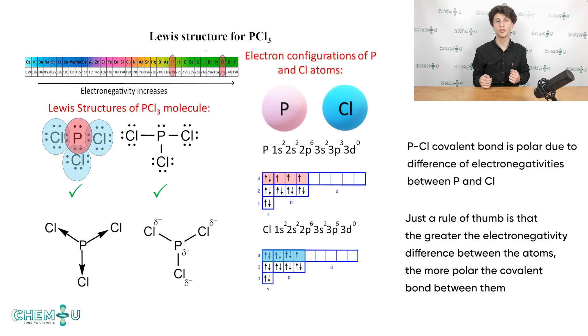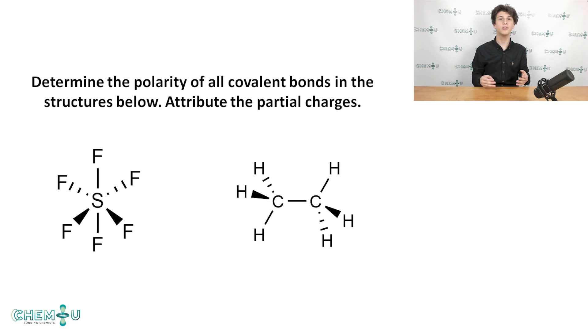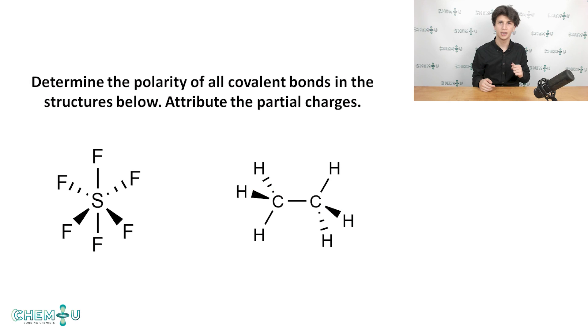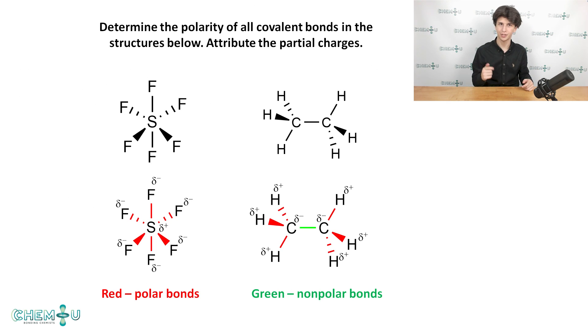Now we know how to determine if a bond is polar or non-polar and the ways to graphically depict it. As usual, here's the exercise for you to solve. Determine if the bonds are polar or non-polar. If the bond is polar, then attribute the partial charges using deltas or arrows. Pause the video and solve it! Here are the right answers. Check yourself. If you have any questions or mistakes, feel free to ask your questions in the corresponding threads on our forum. Most of the questions will be discussed during the webinars.